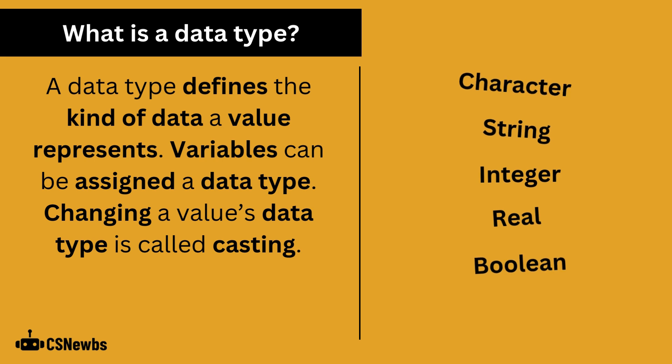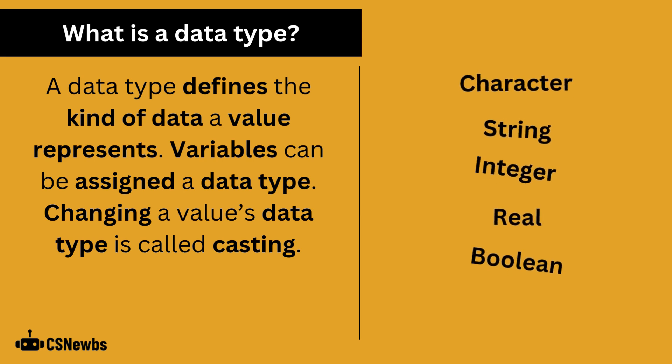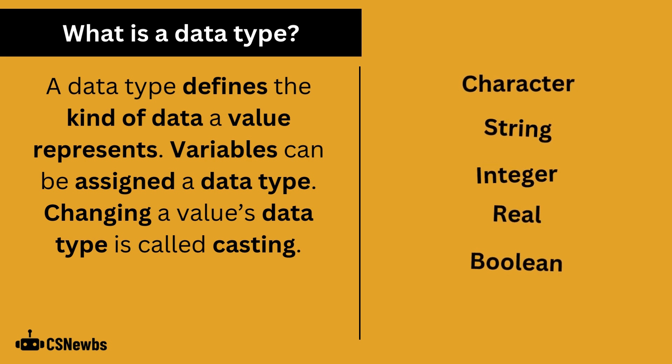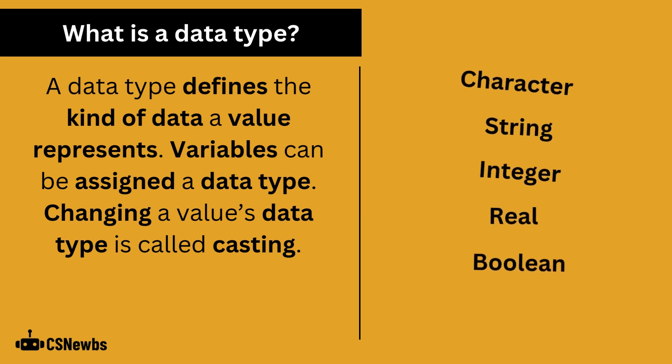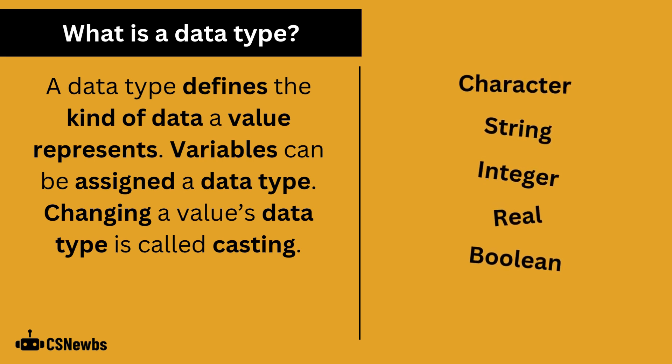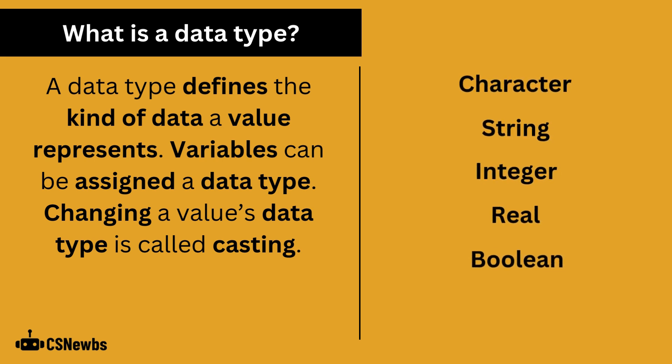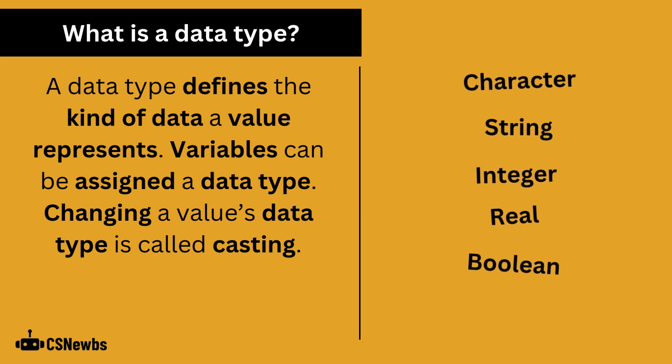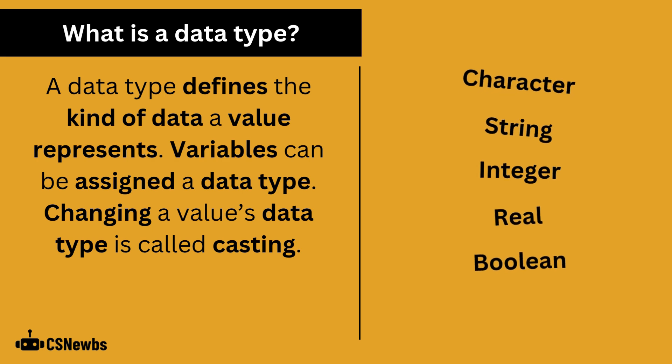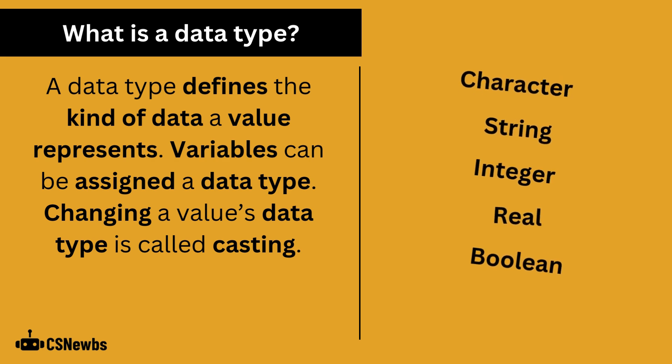A data type defines the kind of data a value represents. Variables can be assigned a data type, and changing a value's data type is called casting.